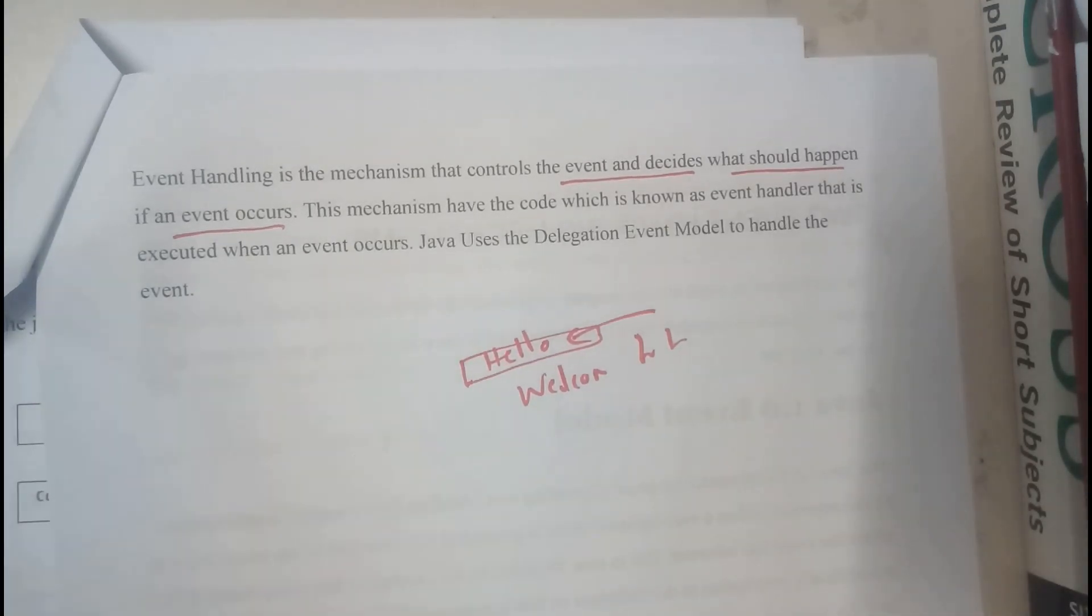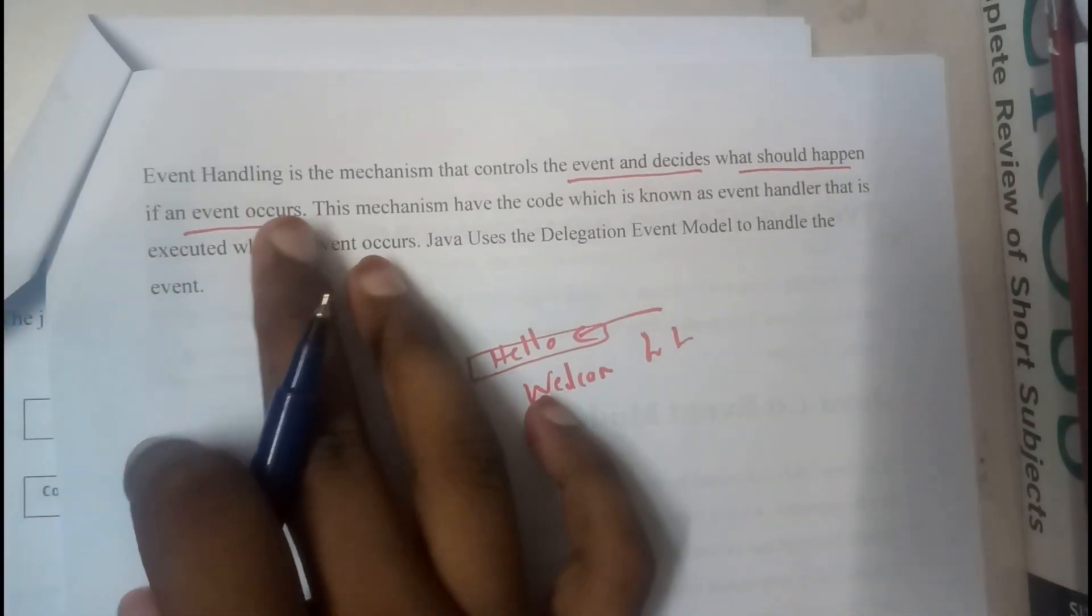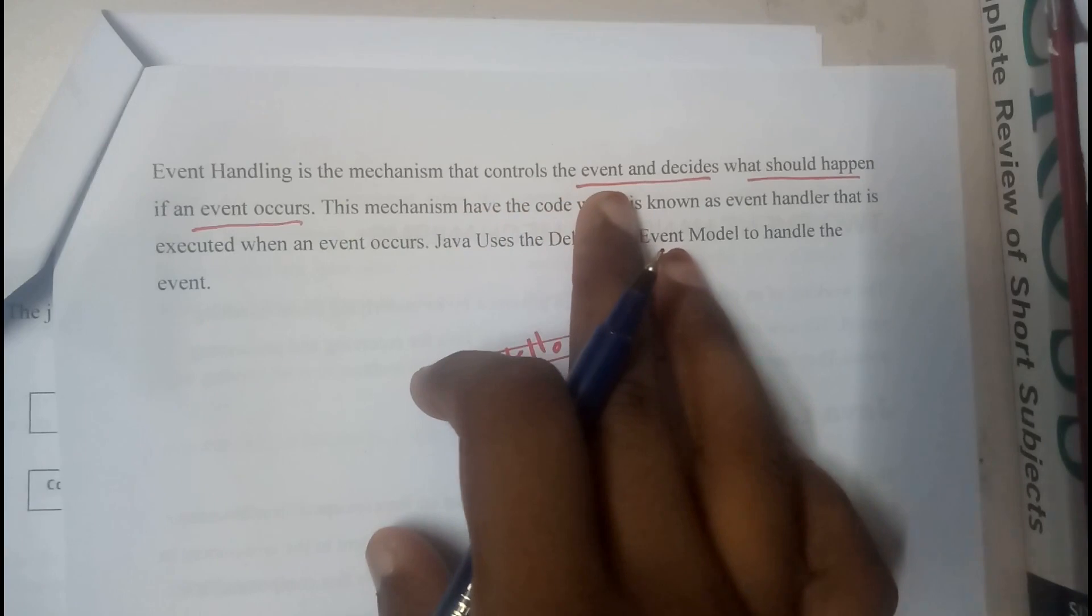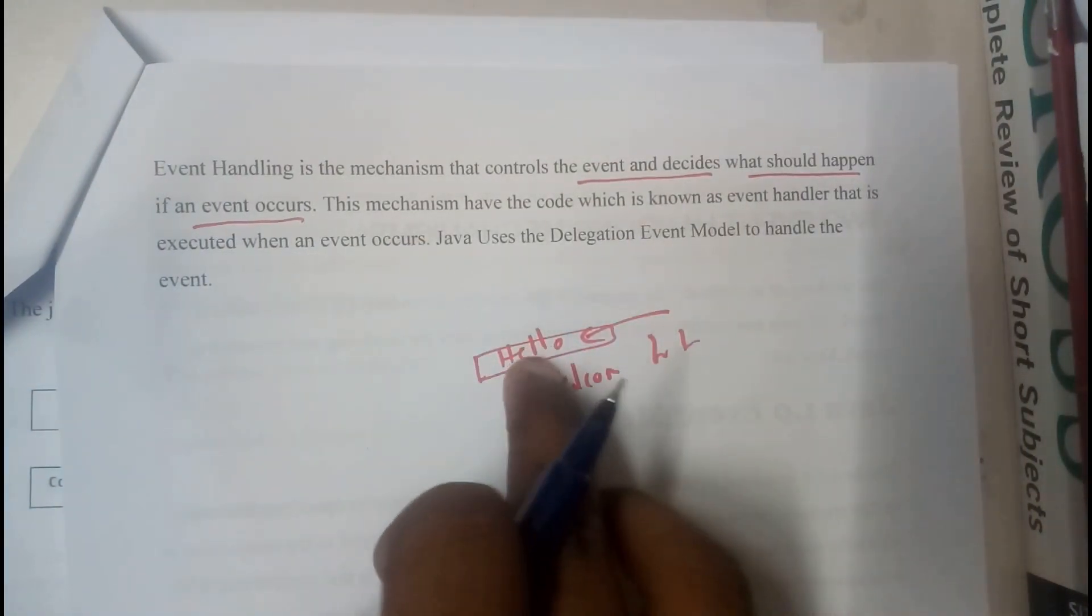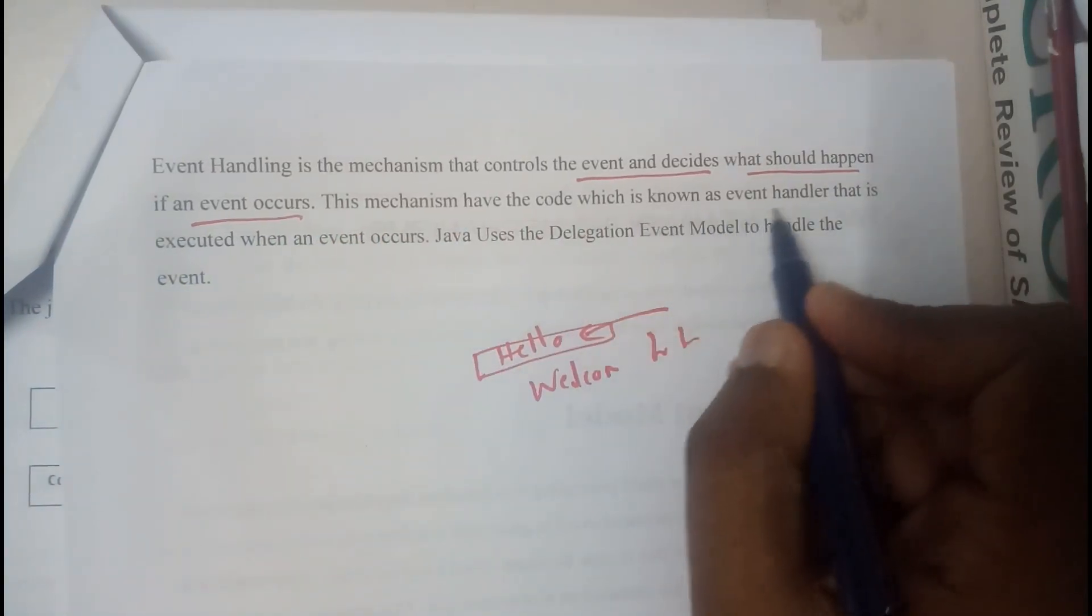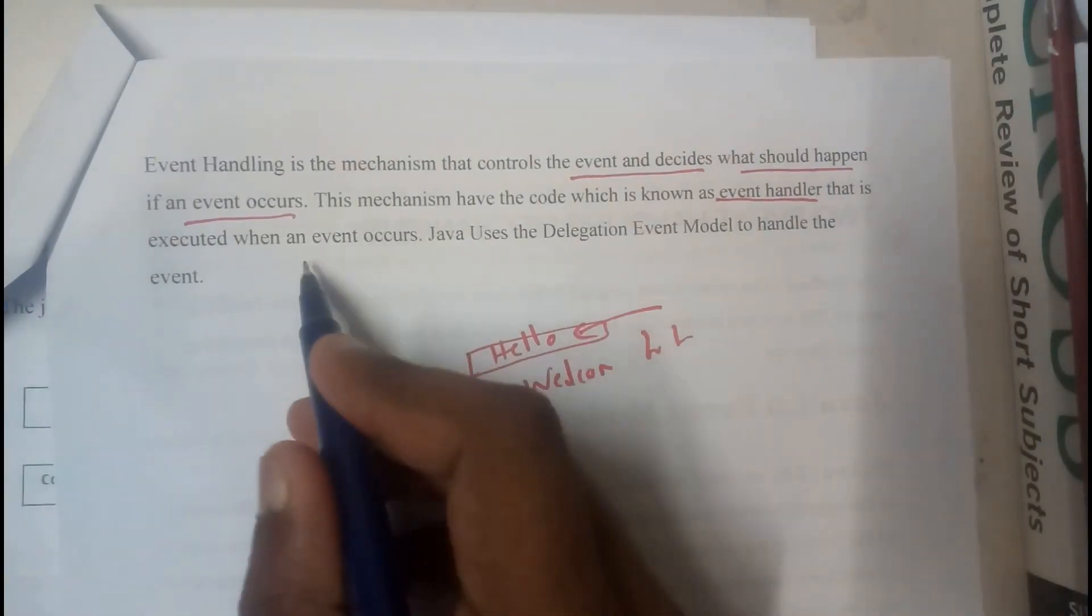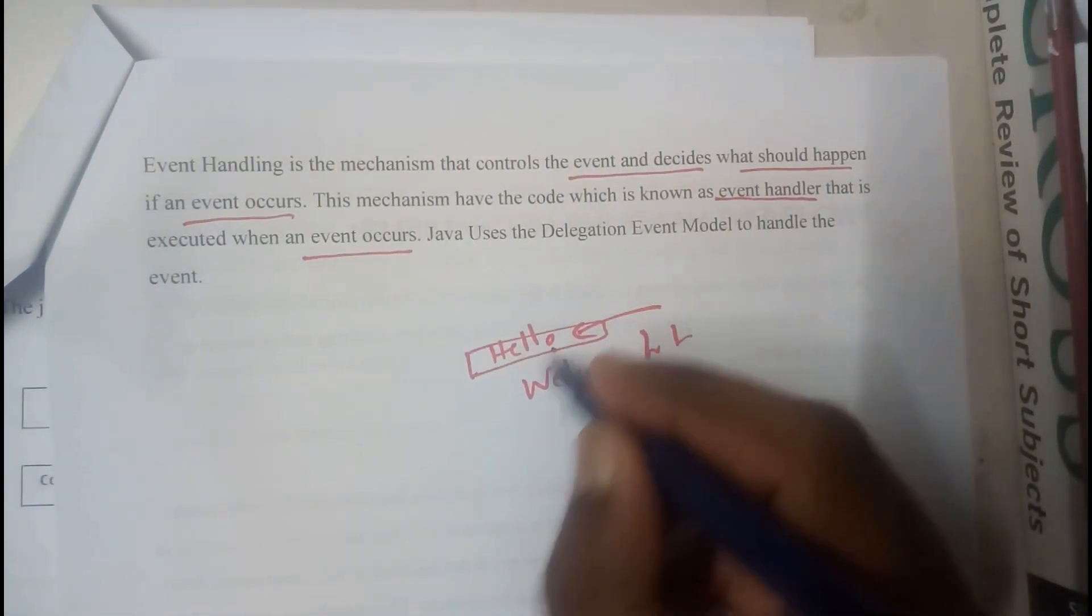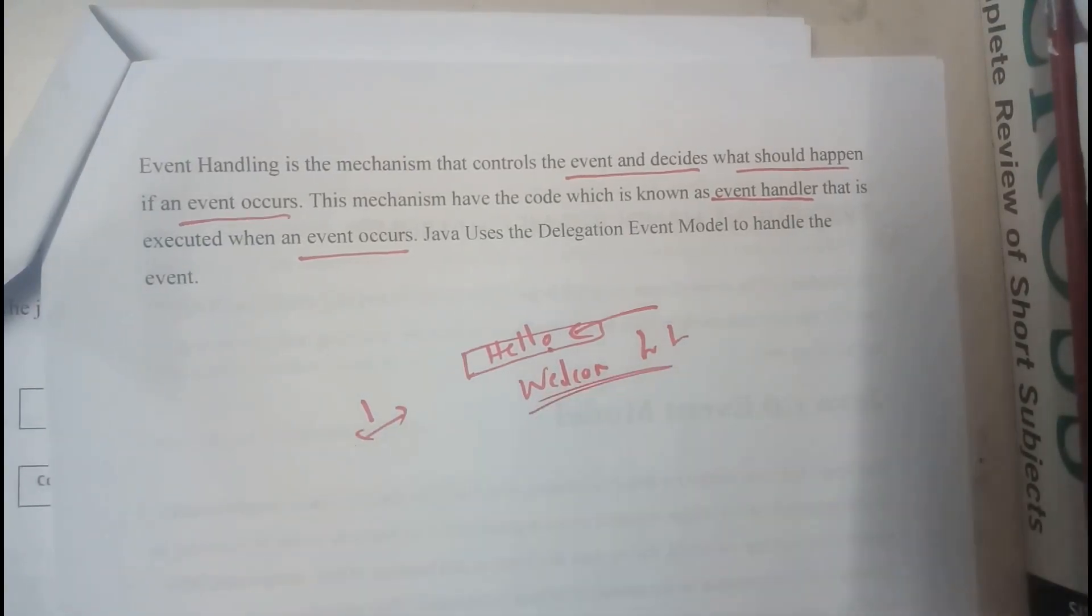That is done using event handlers. Event handling is a mechanism that controls the event and decides what it should do if an event occurs. This mechanism has code which is known as event handler that is executed when the event occurs. Whenever you click that button, that code will be executed and it shows that display message.